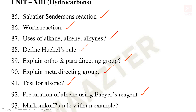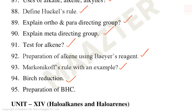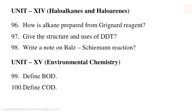Also in Unit 13: Markovnikov's rule is a 3 mark explanation question, Birch reduction, and preparation of BHC. These are the 13th unit important 2 mark and 3 mark golden questions.